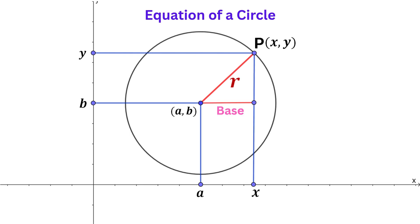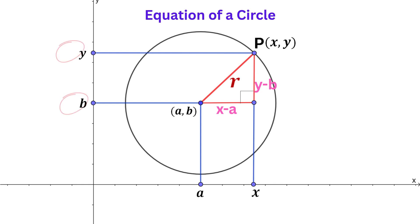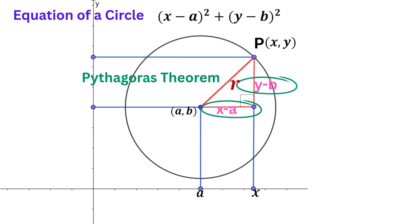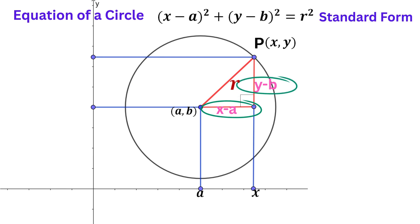The length of the base would be the difference of the two X coordinates, that's X minus A, while the height of the triangle would be the difference of the two Y coordinates, that's Y minus B. If we apply Pythagoras' theorem to this triangle, the sum of the squares of the two shorter sides — that's (X minus A) squared plus (Y minus B) squared — is equal to the hypotenuse R squared.